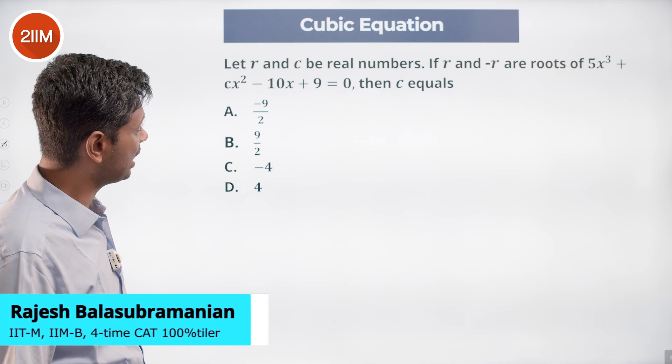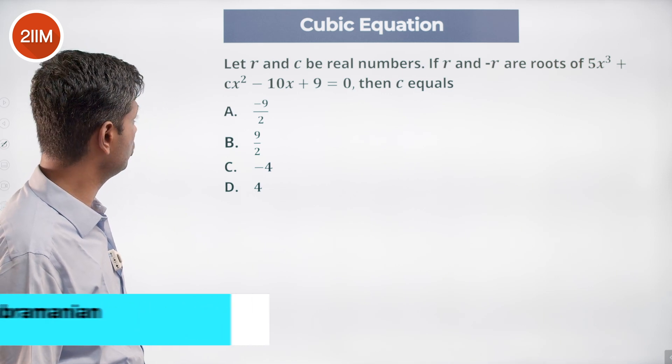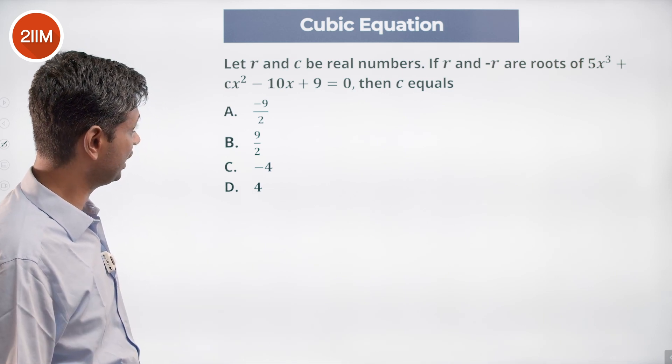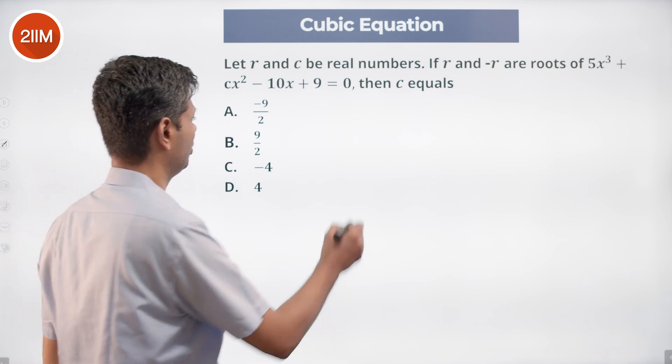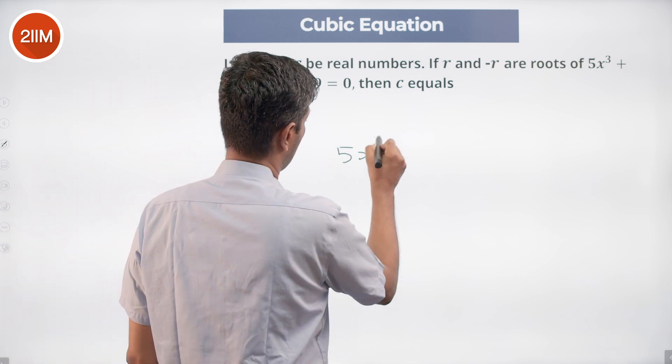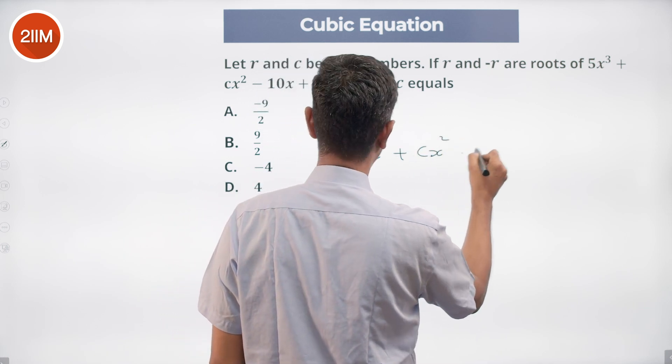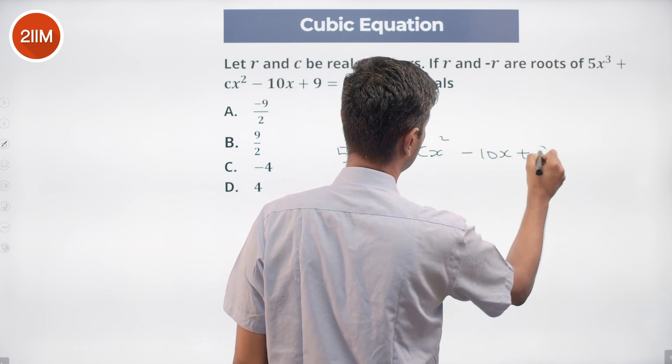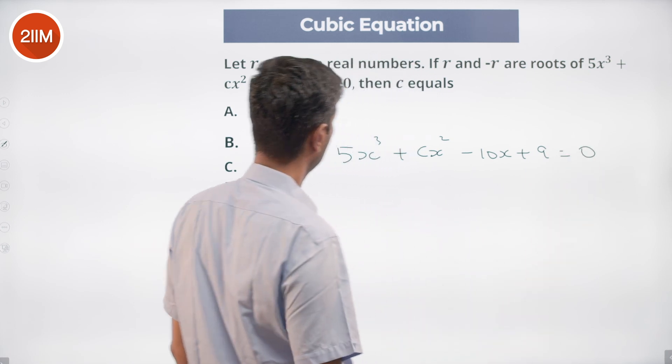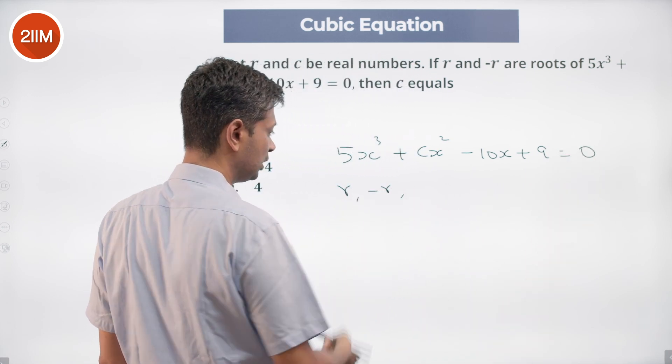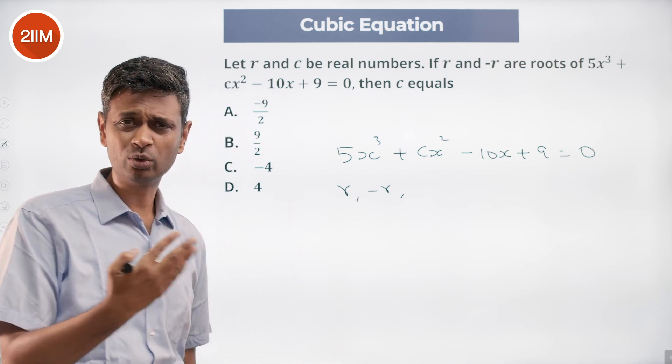Let r and c be real numbers. If r and -r are roots of 5x³ + cx² - 10x + 9 = 0, then c equals? Nice question. 5x³ + cx² - 10x + 9 = 0. The roots are r and -r. Let the third root - a cubic equation has three roots - the third root be p.